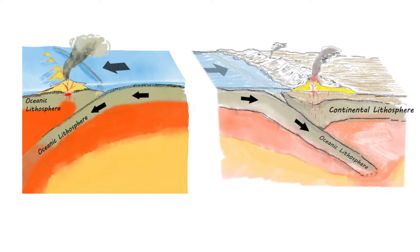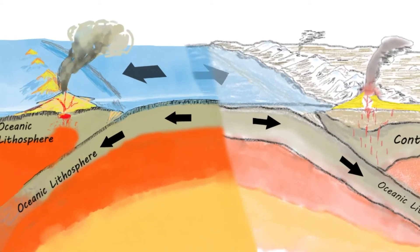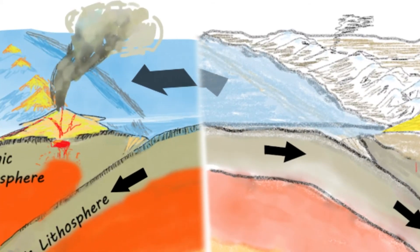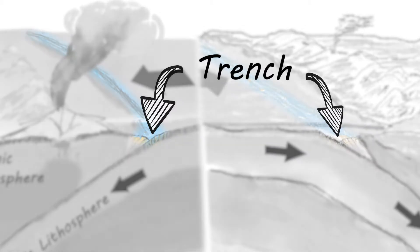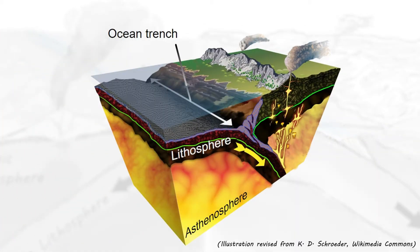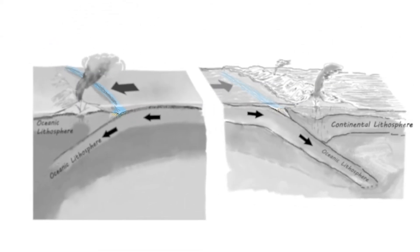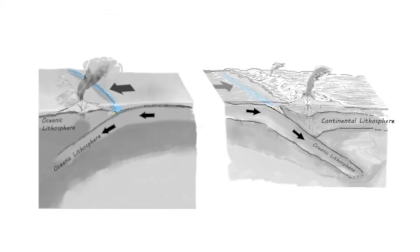In contrast, where an oceanic plate subducts beneath another continental or oceanic plate, an oceanic trench forms. Trenches are the deepest places on Earth's surface. Let's talk about the subduction of oceanic crust first, and then we'll talk about continental collision zones.